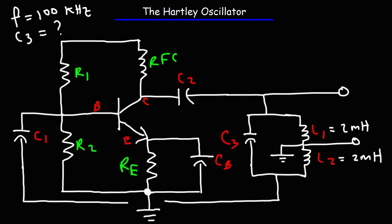What value of C3 should we choose? So let's ignore mutual inductance just to keep the math simple. So if we want to generate or design a Hartley oscillator circuit with a frequency of 100 kilohertz, what value of C3 should we choose?